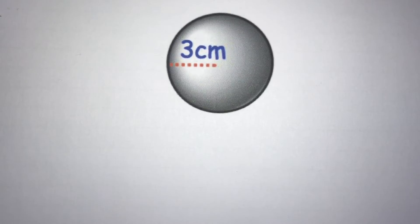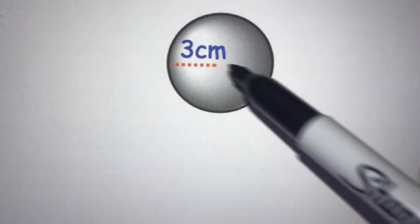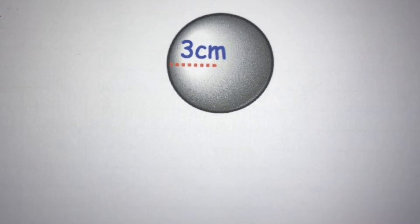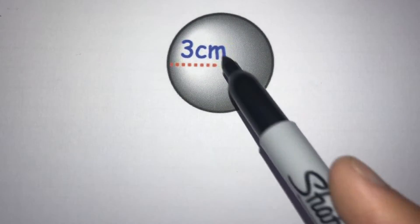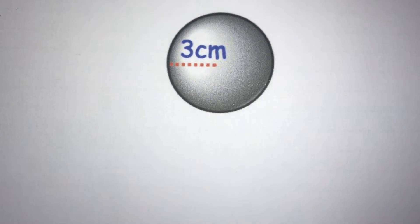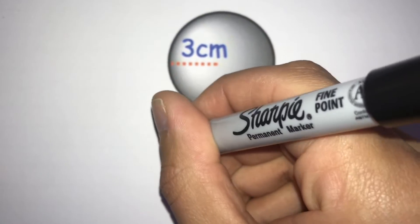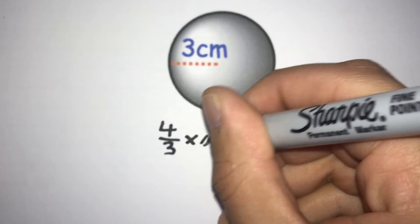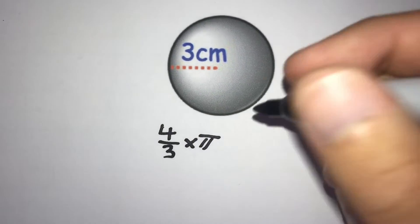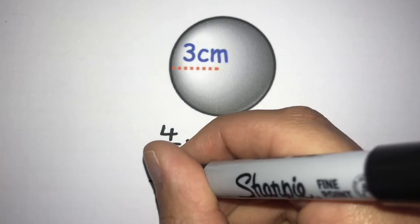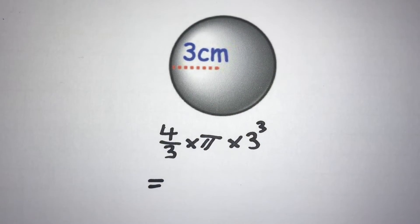Here's another example. This time we've got a radius of 3 centimetres. We're still going to use the same formula — (4/3) × π × r³ — but this time instead of substituting 8 for r, we substitute in 3. So we get (4/3) × π × 3³, and we're going to put this into our calculator.